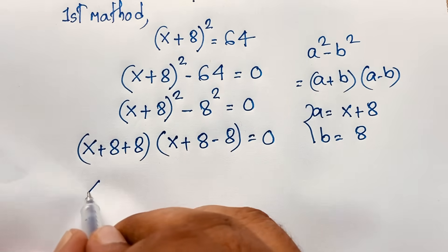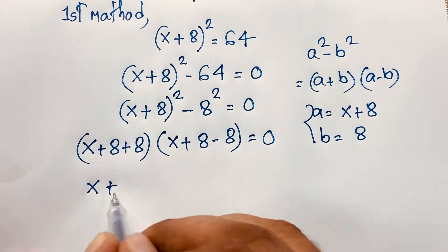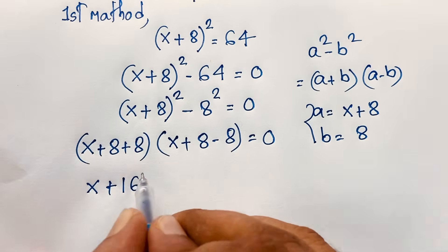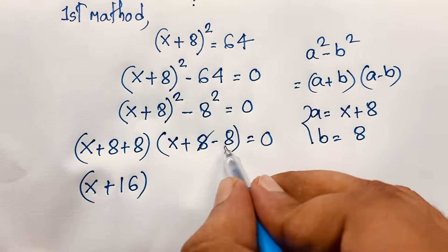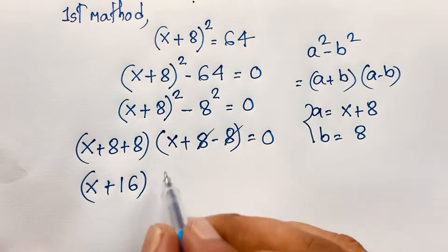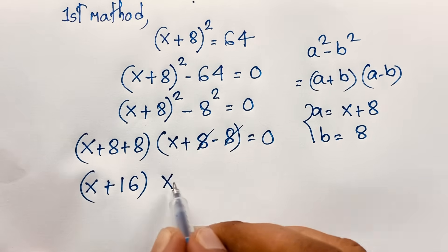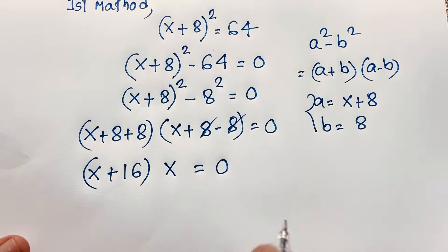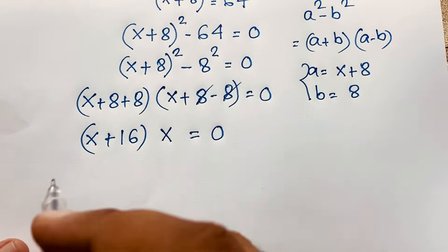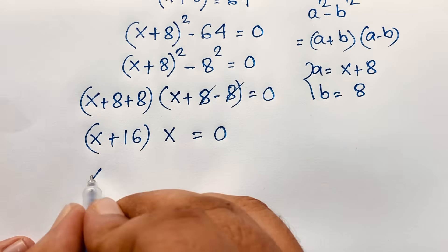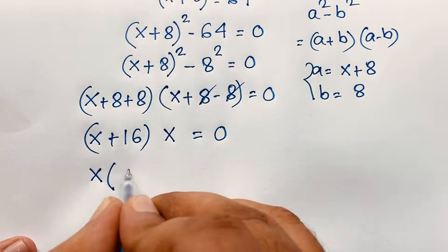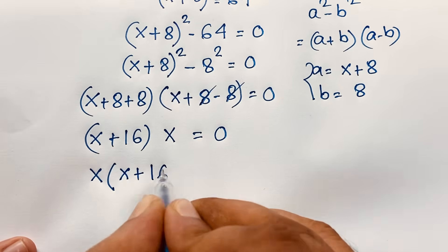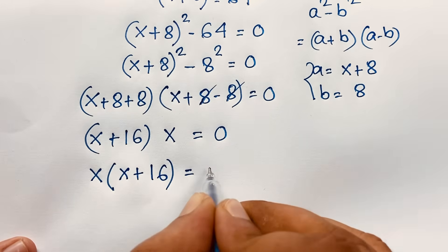So x plus 8 plus 8 gives 16, and x plus 8 minus 8 — the 8s cancel out — gives x. So we find that x(x + 16) = 0.